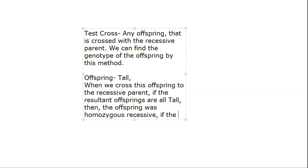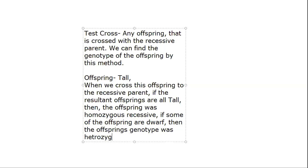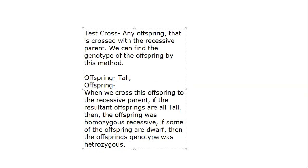If some of the offspring are dwarf, then the offspring's genotype was heterozygous. In this way, we have to know if it is homozygous or heterozygous. If the offspring is dwarf, then we know that the genotype is small t small t — homozygous recessive.